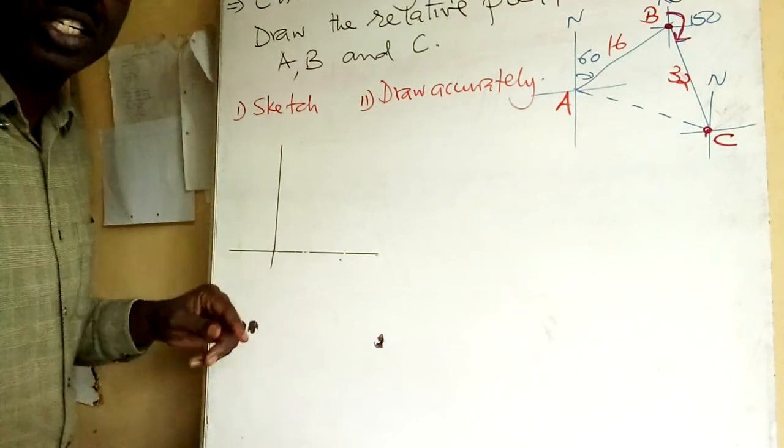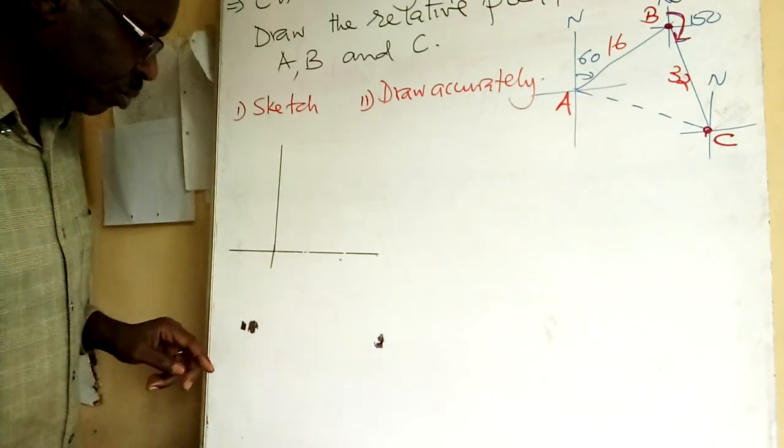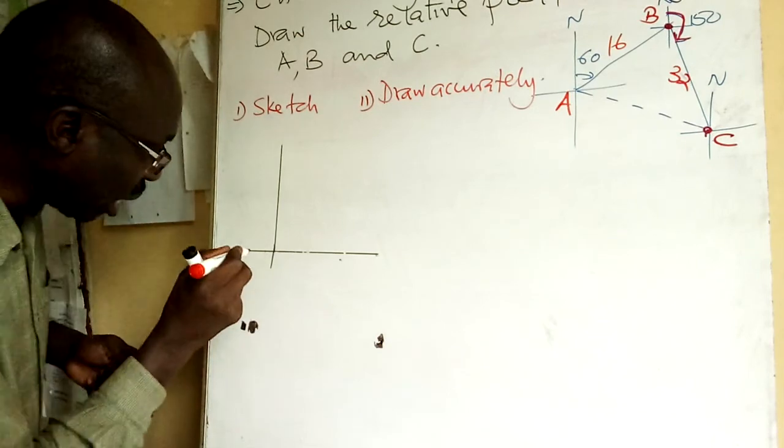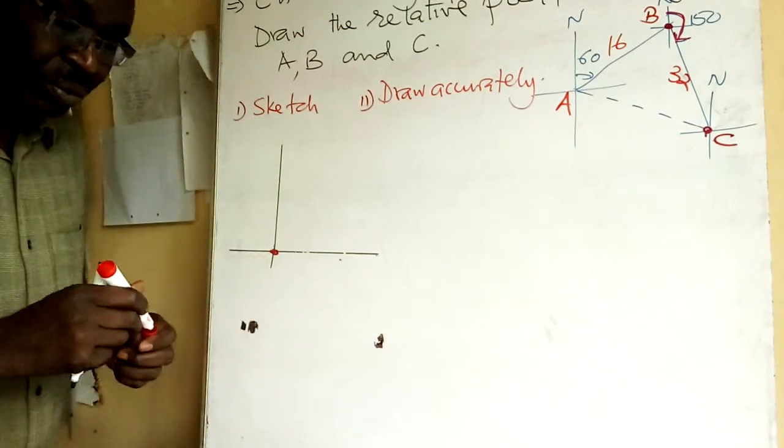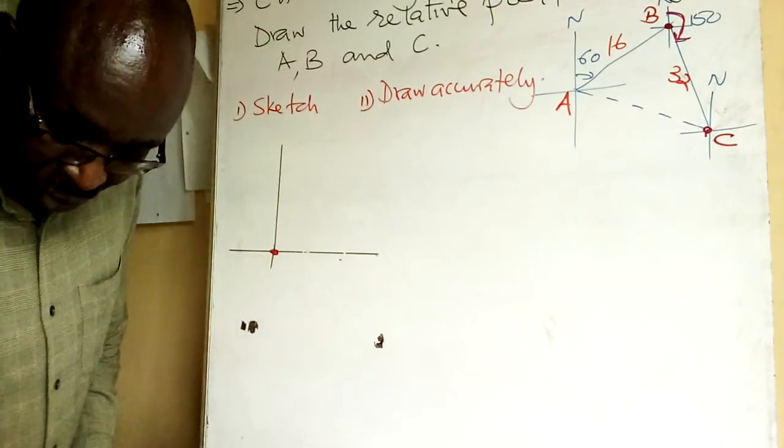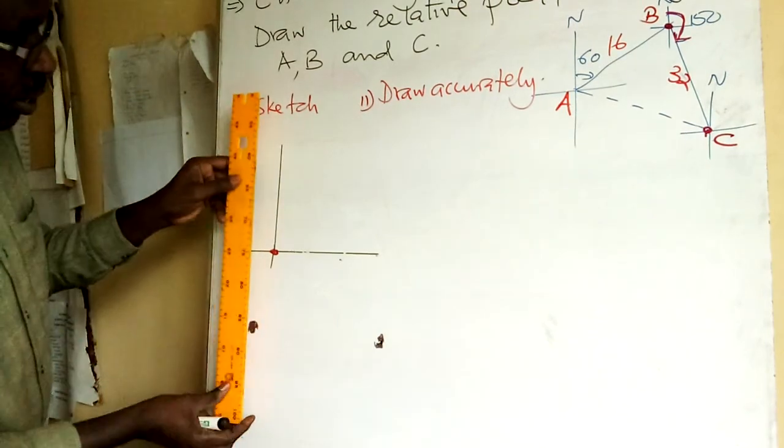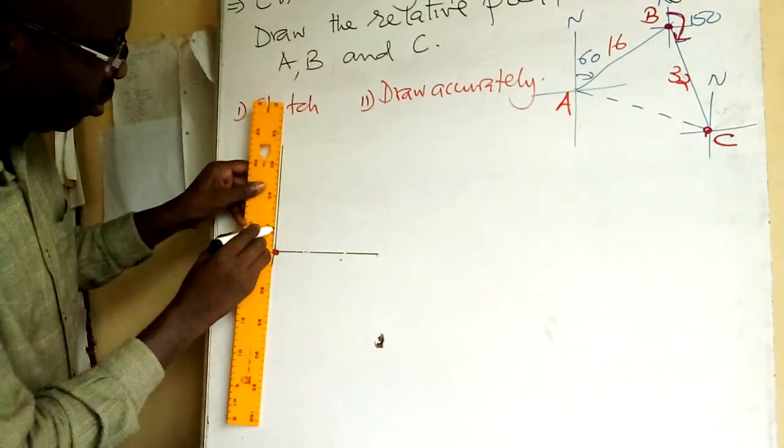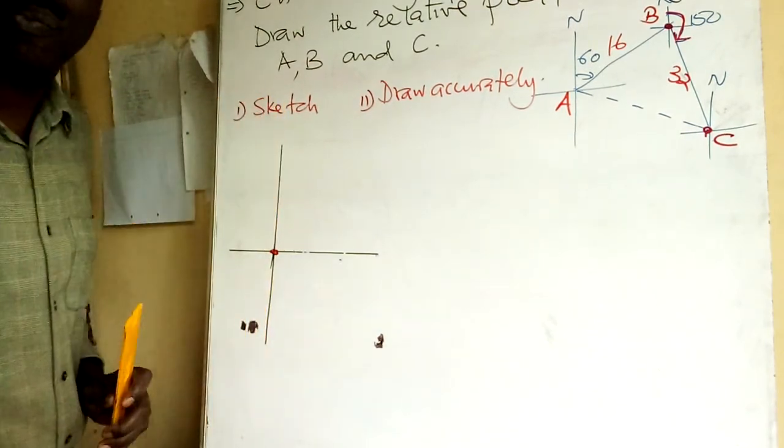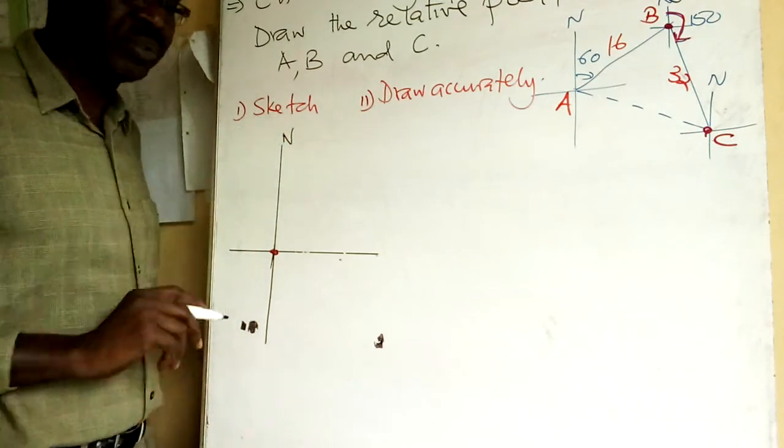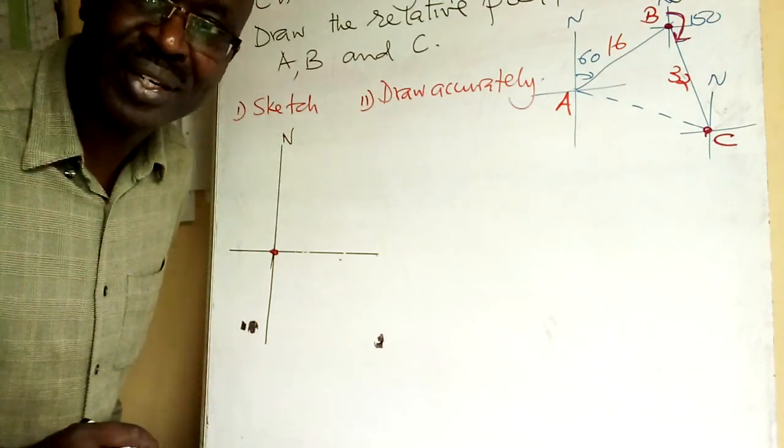My set square and draw here. Still, I will get the two perpendicular. Alternative, you use protractor. It has 90. So I had already put a point here. Now you have, that is your first compass. This is north.